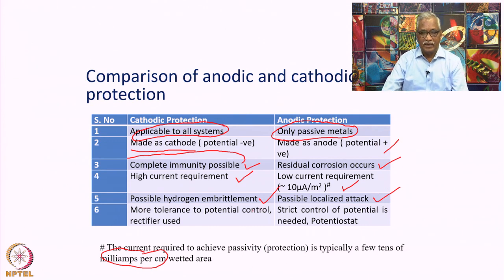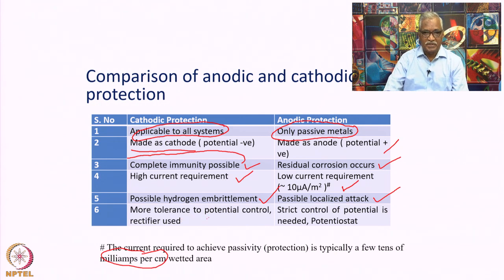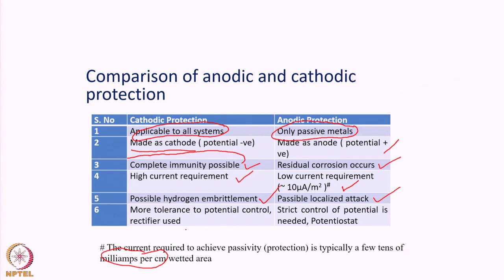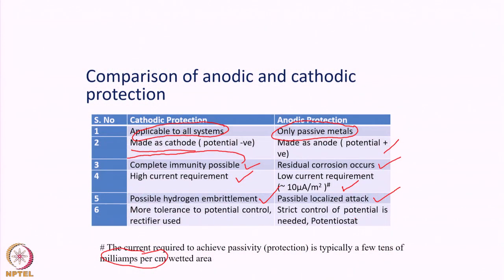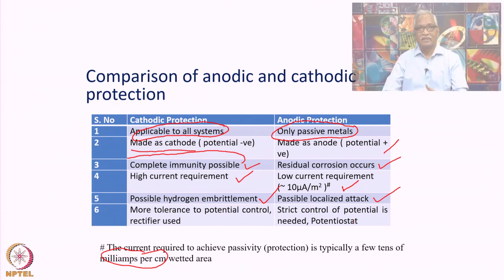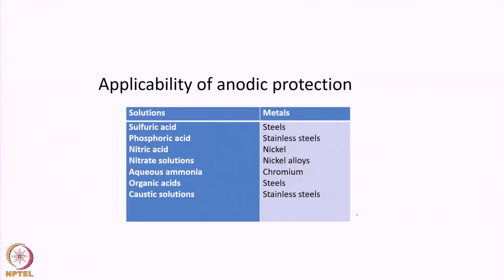Another important difference is that cathodic protection is more tolerant towards potential control — you can have a varying range of potentials, with only the extent of protection changing. In anodic protection, there must be strict control of potentials. If the potential moves towards the active direction, corrosion will increase rather than decrease. Anodic protection is restricted to certain systems.